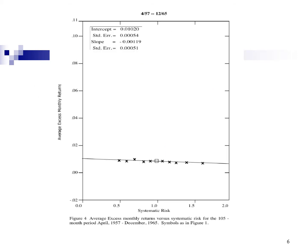In the sub-period from April 1957 to December 1965, gamma 1 is found to be negative. Black, Jensen, and Scholes describe gamma 1 as having the wrong sign. The higher the beta, the lower the excess return. In this case, CAPM is not valid.